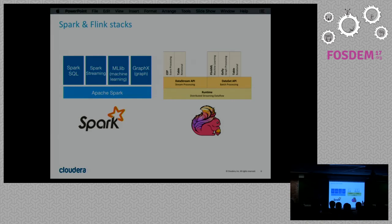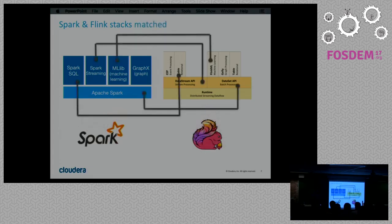In Flink, if you want a finite data set or something near real time — maybe giving answers under a second — both are native implementations. Streaming doesn't get translated on top of a batch job, and that has different implications. In Spark it's much easier to integrate streaming and batch because a streaming job is just a sequence of batch jobs, but it might be limiting in a couple of cases — so it's a trade-off.